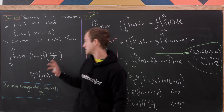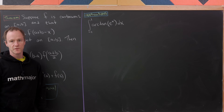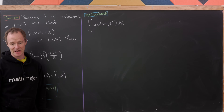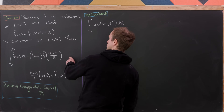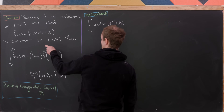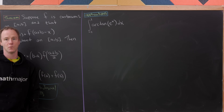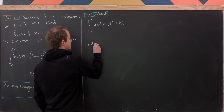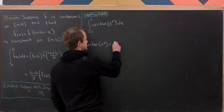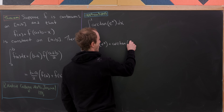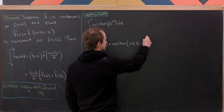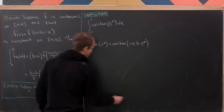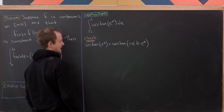Now let's apply the formula. For our first application, we look at the integral from -1 to 1 of arctan(e^x) dx. We first check that the hypothesis is satisfied by examining arctan(e^x) + arctan(e^((-1 + 1) - x)), making sure we do this exactly and checking the hypothesis.